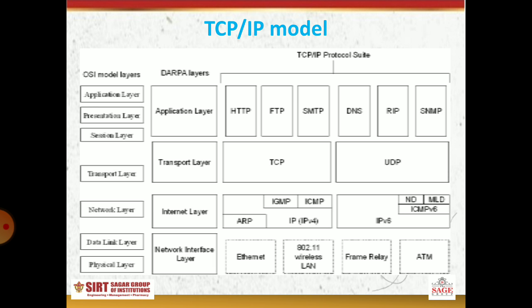In the OSI model the next layer is the network layer. In TCP IP, we compare this with the internet layer, and the protocols are IGMP (Internet Group Message Protocol), ICMP, ARP, RARP, and IP, which is the most important. The next layers of the OSI model — the data link layer and physical layer — are combined in the TCP IP model, and we call this the network interface layer or network access layer. In that layer, we study Ethernet, 802.11 (wireless), frame relay, and ATM.